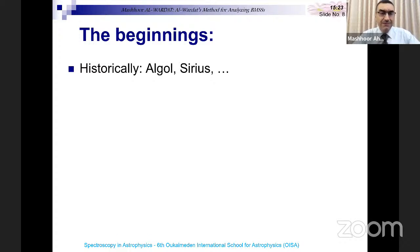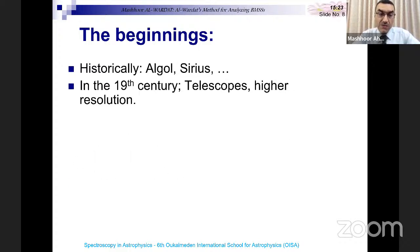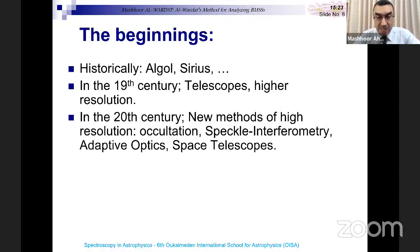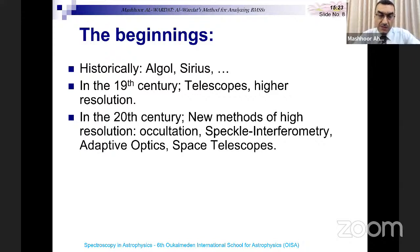Historically, we know binary stars like Algol and Sirius, which has a white dwarf companion. In the 19th century, telescopes with higher resolution revealed these as binary systems. In the 20th century, new high-resolution methods emerged: lunar occultation, speckle interferometry — introduced around 1970–71, so about 50 years of use — adaptive optics, introduced in the 1990s, about 30 years of use, and space telescopes. Now we have very high resolution with the James Webb Space Telescope and Gaia Space Telescope.